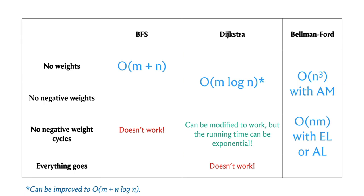Going back to our summary, the Bellman-Ford algorithm has a running time of either O(n³) or O(n·m) depending on whether we model graphs as adjacency matrices or adjacency lists respectively. This algorithm does exactly what we want: it identifies negative cycles when present and computes shortest paths when they are absent.